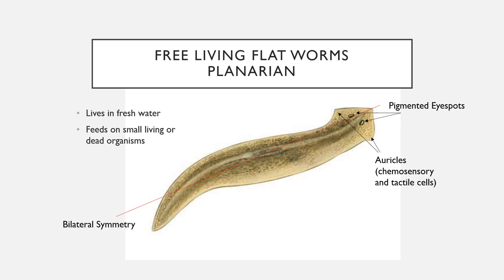Planaria live in freshwater. They are free-living and feed on small living or dead organisms. They have bilateral symmetry, pigmented eye spots that provide a rudimentary sense of sight, and auricles — little bulges on either side that look like cheeks. These auricles are chemosensory and tactile cells that allow planaria to sense their environment and move toward or away from stimuli.